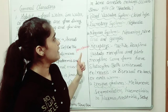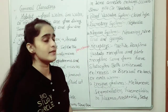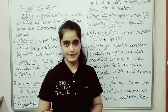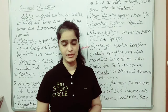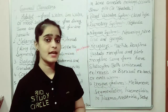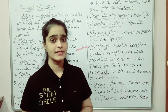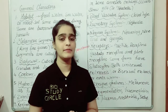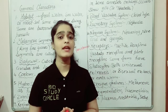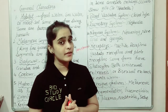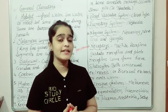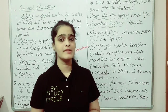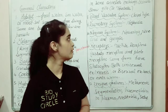The blood vascular system is of the closed type, meaning blood vessels are present. The color of the blood is red because a red color pigment is present — that pigment is called hemoglobin.